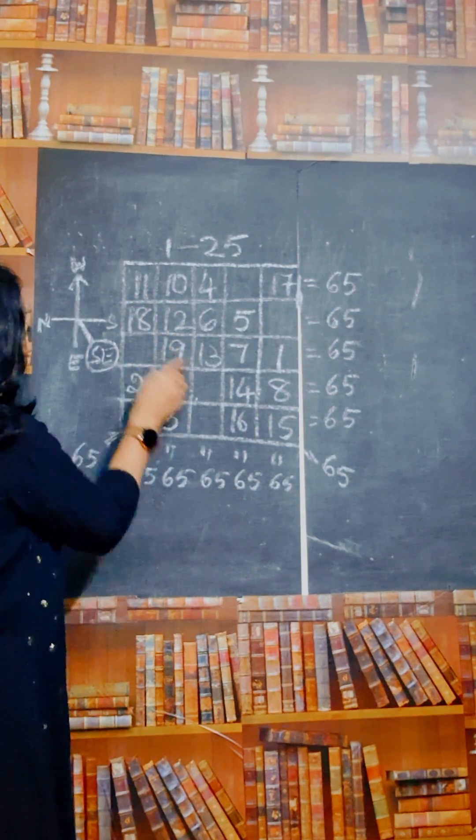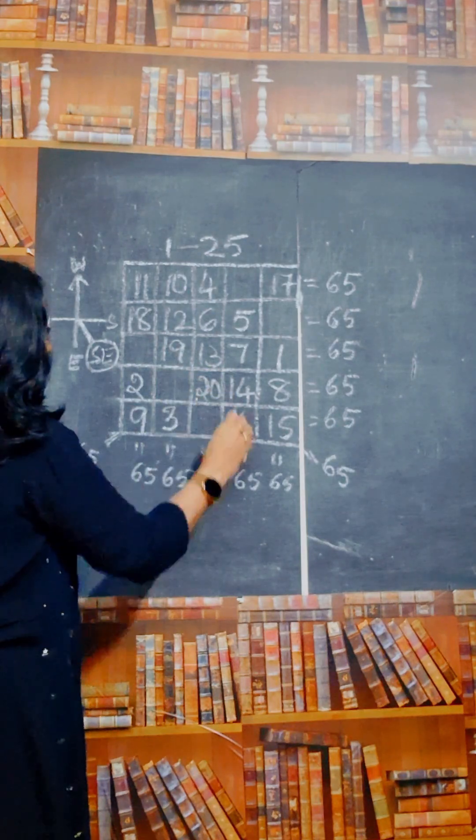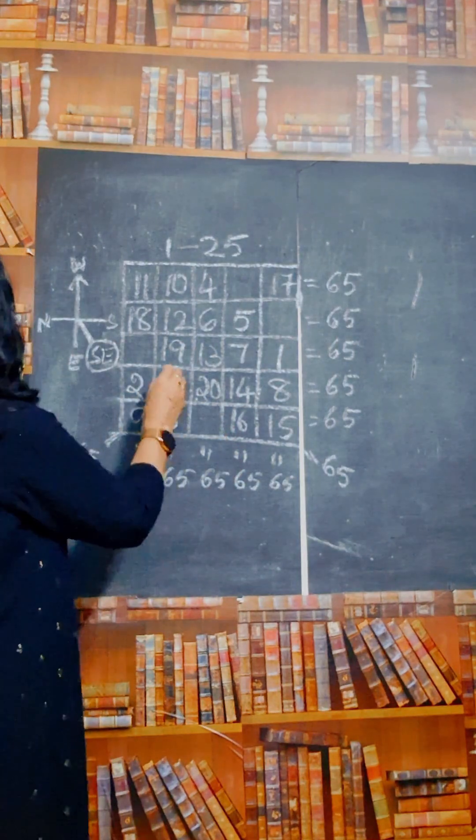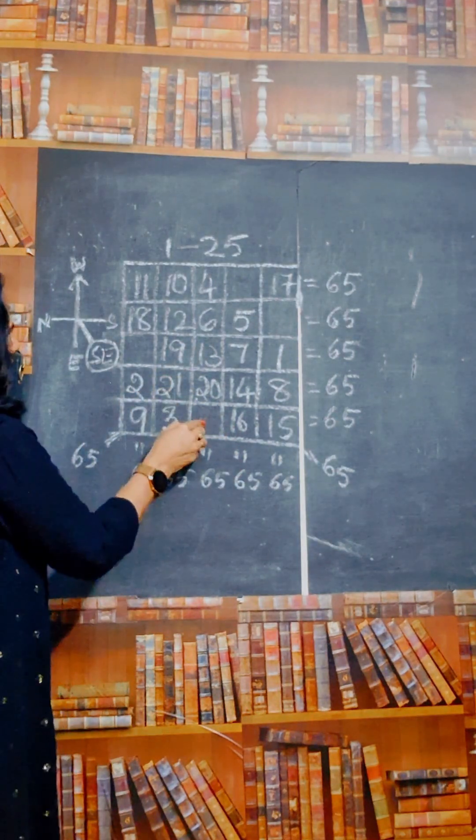South east, 19. South east, 20. Here 21, but there is already filled. Go to the next box. Then it is 21, south east.